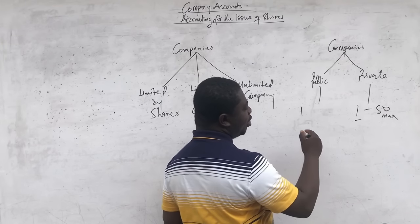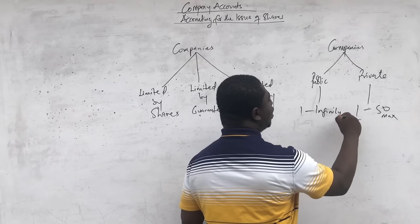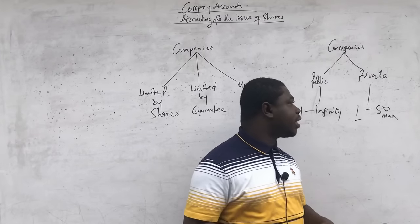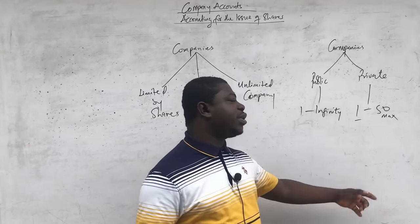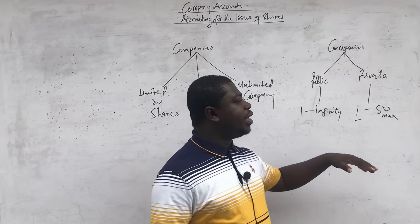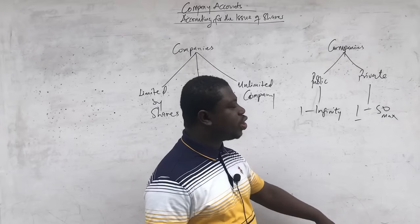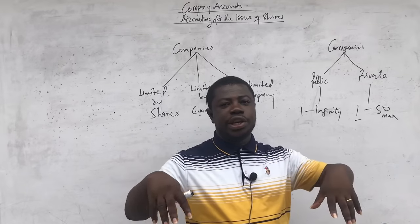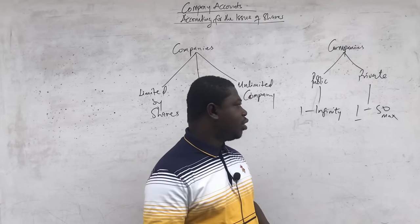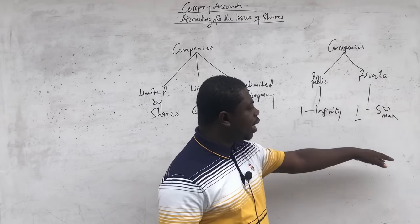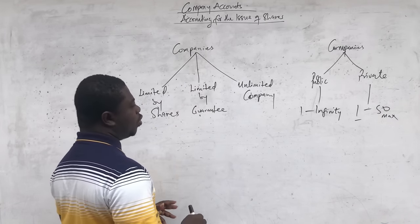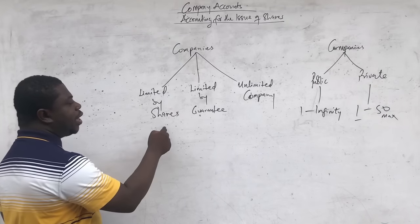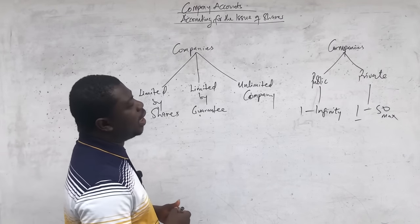A public company usually has a minimum of one and a maximum of infinity, meaning that public companies can issue shares and people can subscribe up to a maximum number that cannot be fixed or determined. So a public company can issue shares to as many shareholders as they want, but sometimes they are limited by the regulations of each country where they operate. This covers the public and private company distinction, as well as the limited by shares, guarantee, or unlimited liability company types.